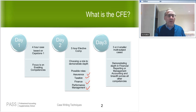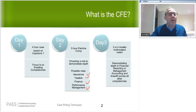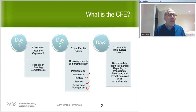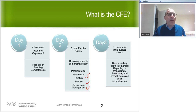Regarding a question about day two weighting: most of the required will relate to your elective area. You may have a couple of required relating to accounting and then numerous required relating to your specialty area. So the biggest part of the weighting will be on your specialty area. For example, if you chose taxation as your depth area, most of your required will relate to taxation.